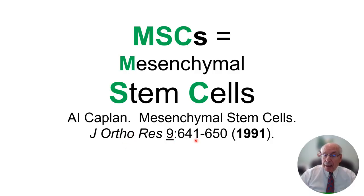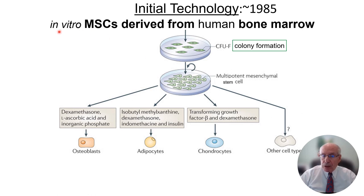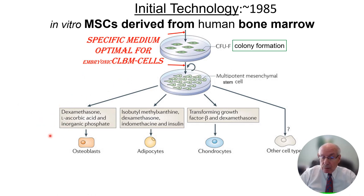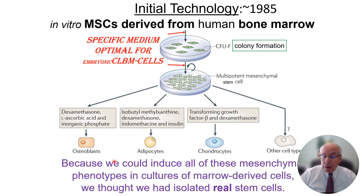In 1991, I coined the term mesenchymal stem cells because I took bone marrow, dispersed it, and from a gradient put cells from the light cell fraction onto Petri dishes. They formed colony units and divided like wildfire. The trick to the whole technology was a medium optimized for embryonic chick limb bud mesenchymal progenitor cells. I could induce them with these unique and powerful inductive media to become bone-forming, fat-forming, or cartilage-forming cells. I thought I had isolated real stem cells.